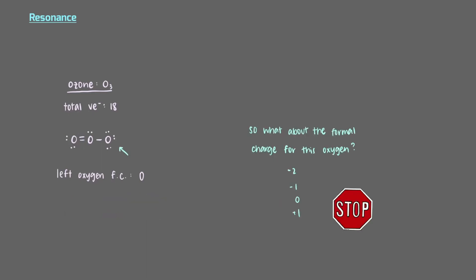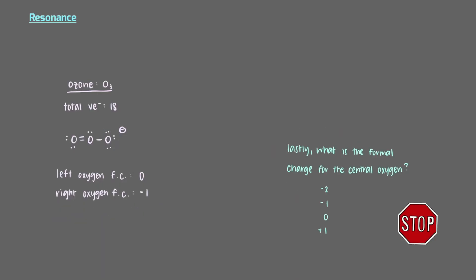So what about the formal charge for this oxygen? There are seven electrons in this lasso, so the formal charge of this oxygen is minus one. Lastly, what about the formal charge for the central oxygen? There are only five electrons in this lasso, so this oxygen has a formal charge of plus one. That's a lot of formal charges, so let's double-check our work.